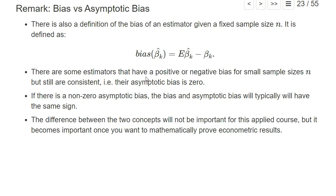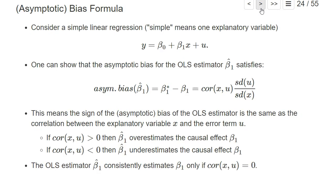There's also the definition of a finite-sample bias rather than an asymptotic bias, but I won't go into detail there. Typically, for all our examples, if you have an asymptotic bias that's positive or negative, in almost all cases the finite-sample bias will have the same sign as the asymptotic bias. So in this course I typically use both terms interchangeably.